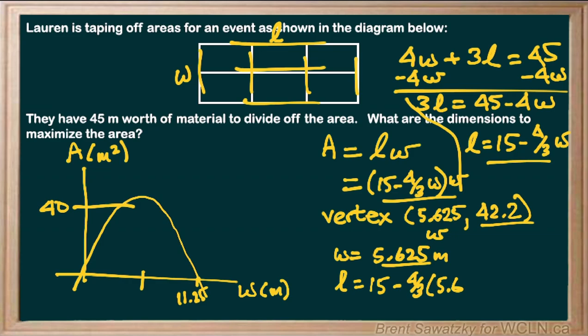We'll plug in our 5.625 because we want it to be the length when it's a maximum. We already know the width is 5.625 at that maximum, so plugging it in works out well and we end up with 7.5 meters. So our two dimensions are 5.625 and 7.5.